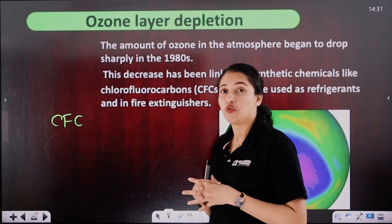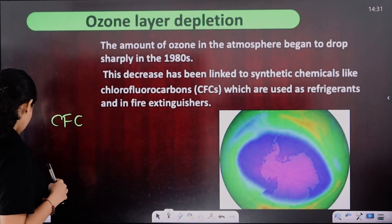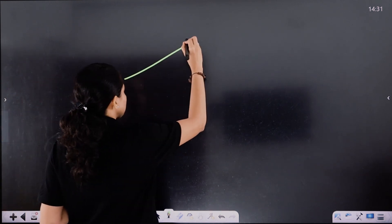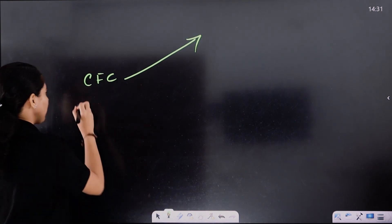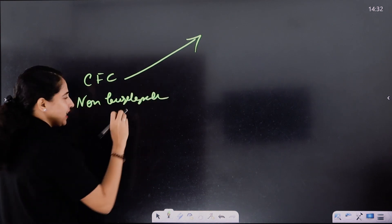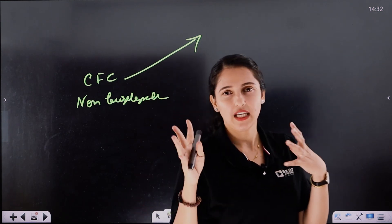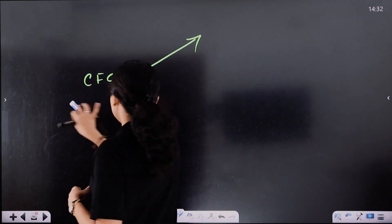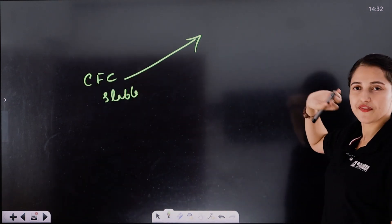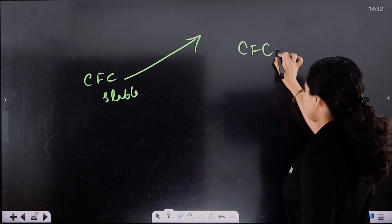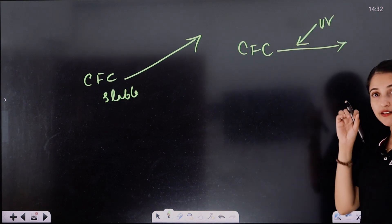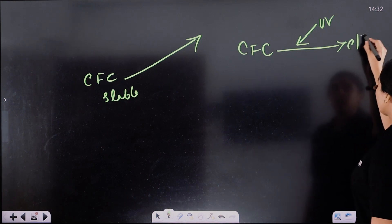How do CFCs deplete the ozone layer? CFCs from air conditioners rise into the stratosphere. They are non-biodegradable and very stable compounds. When CFCs are exposed to UV light in the stratosphere, they release free chlorine atoms. These chlorine atoms then react with and break apart O3 molecules, reducing the ozone layer.